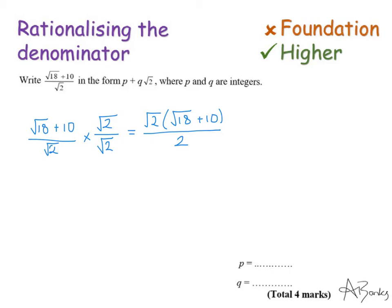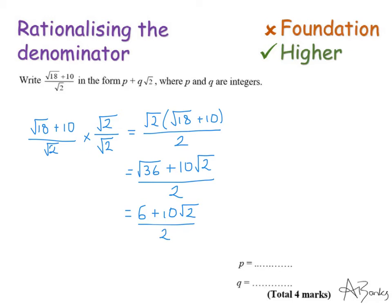Expanding the bracket on the top, I've got root 2 times root 18, which is root 36, giving 6 plus 10 root 2, all over 2. Root 36 is just 6, so this is 6 plus 10 root 2 all over 2. We can simplify further by dividing every term by 2: 6 divided by 2 is 3, and 10 root 2 divided by 2 is 5 root 2. The question asks for P and Q — P is 3 and Q is 5.